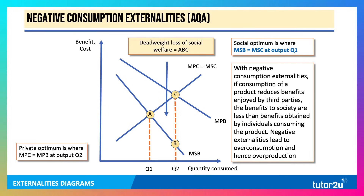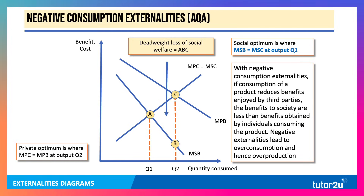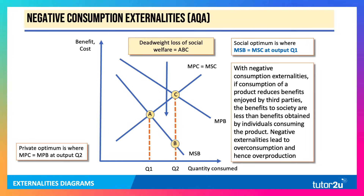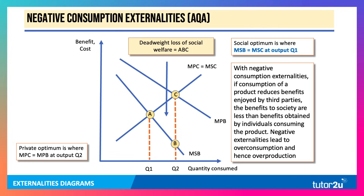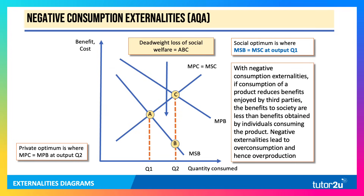With negative consumption externalities for AQA, social benefit lies below private benefit. The consumption of a product reduces benefits enjoyed by third parties, so the benefits to society are less than the benefits from individuals consuming the product. As a result, if social benefit lies below private benefit, negative consumption externalities lead to overconsumption — Q2 instead of Q1 — and hence overproduction. The private optimum is output Q2, the social optimum is output Q1, and the welfare loss is shown by the area A, B, C.